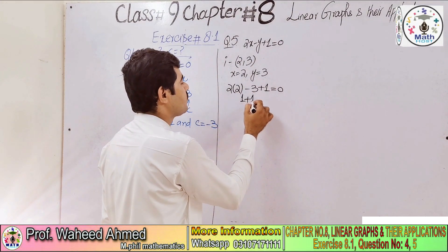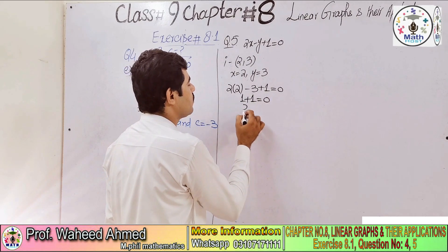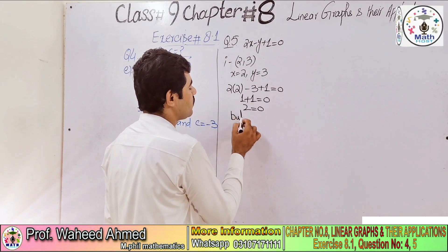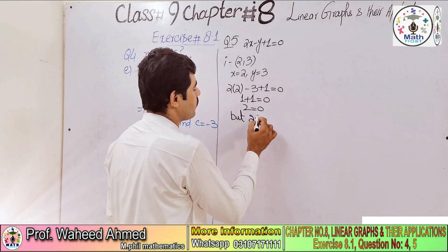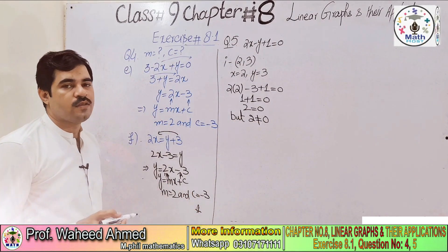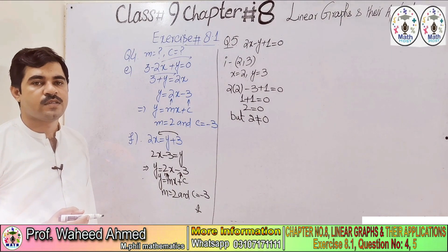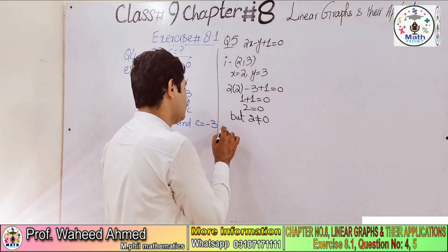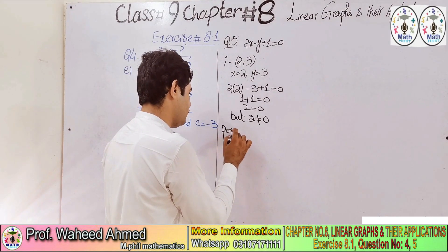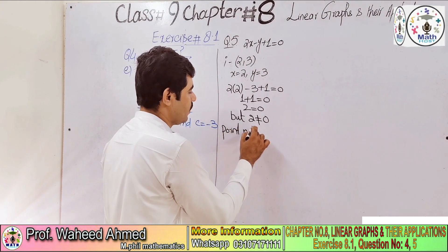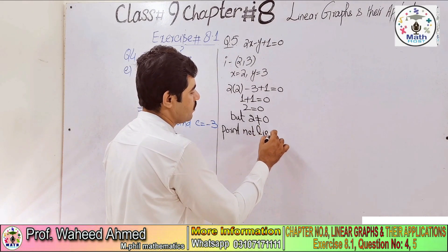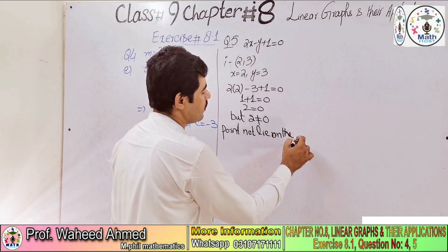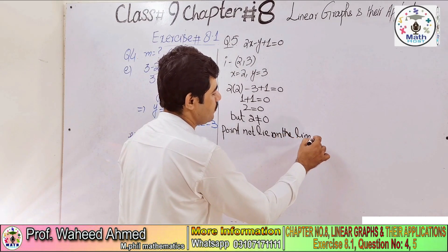Calculating: 4 - 3 is 1, and 1 + 1 = 2. So 2 = 0, but 2 cannot be equal to 0. Therefore the point (2, 3) does not lie on the line.